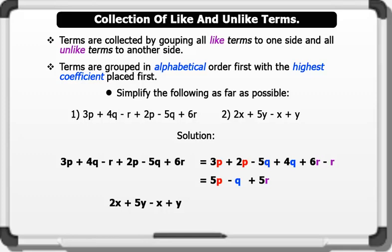When we group, we have 2X minus X plus 5Y plus Y.